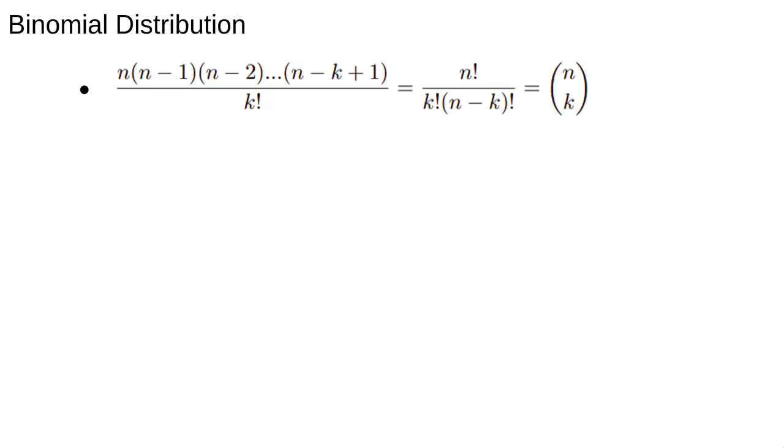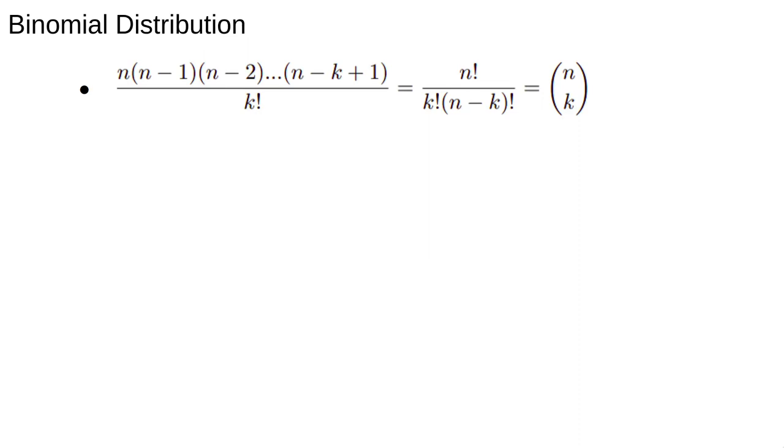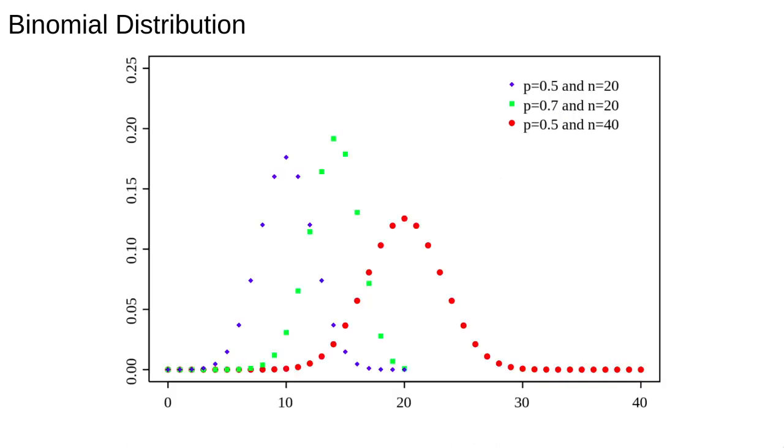Putting that all together and doing some algebra we have n choose k ways to obtain k successes in n trials. Combining this factor with the probabilities for each outcome the probability to observe k successes in n trials is n choose k times p to the power of k times 1 minus p to the power of n minus k and this is known as the binomial distribution. It looks like this and we will study it more in the exercises.